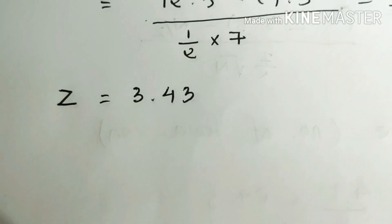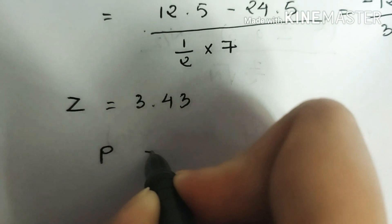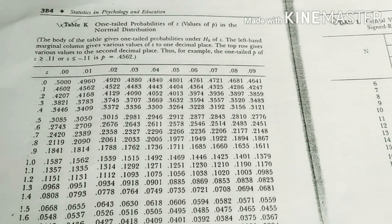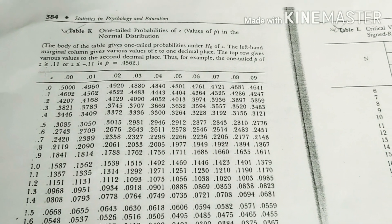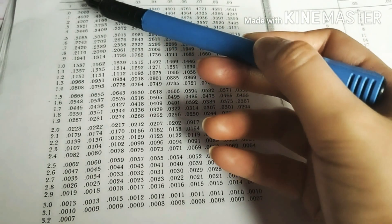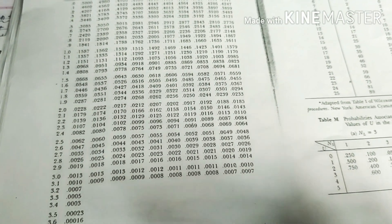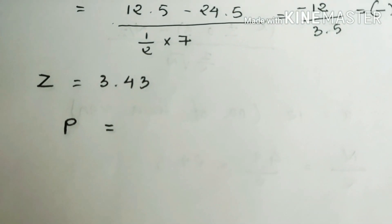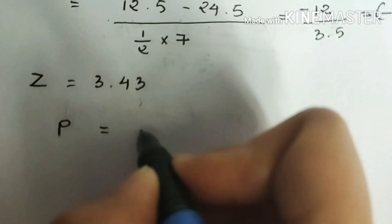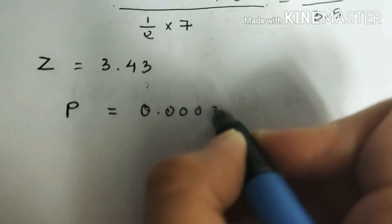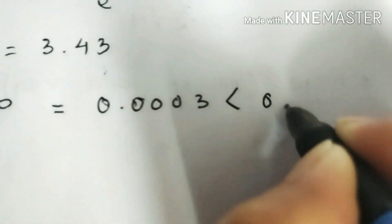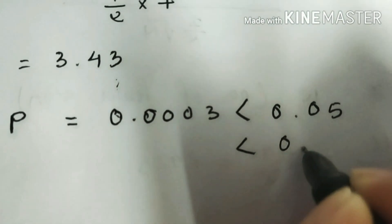Now to find the value of p, which is the probability value, we use the one-tail probability table that I have already shared in the notes. This table is used to find the value of p when the sample size is greater than 25 in the Sign Test. The value of z was 3.43. Looking at the column for 3.4, the maximum value is 0.003. After consulting the table, the one-tail p-value associated with our computed z value of 3.43 is 0.003.